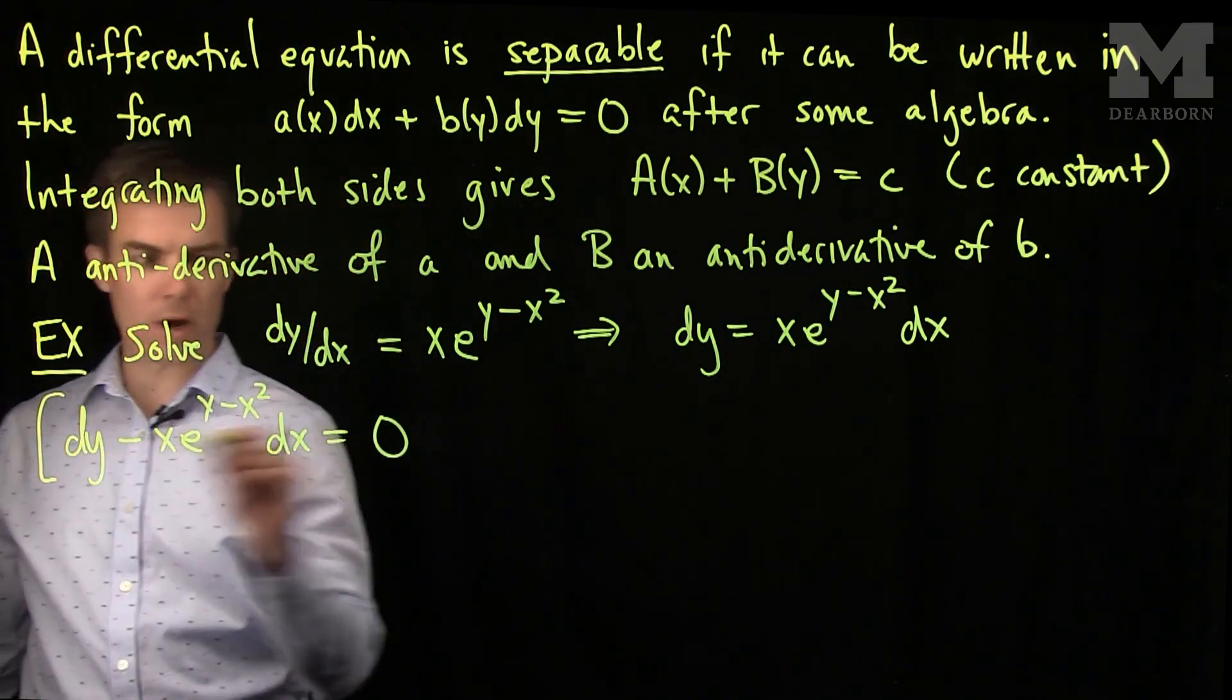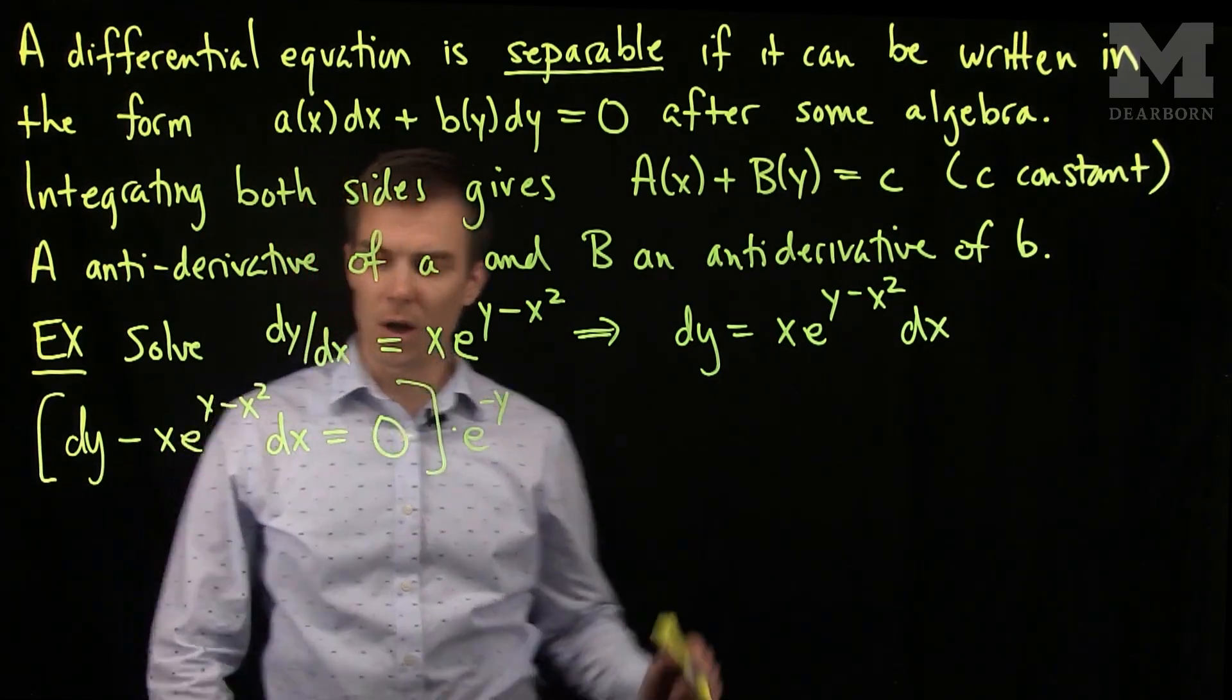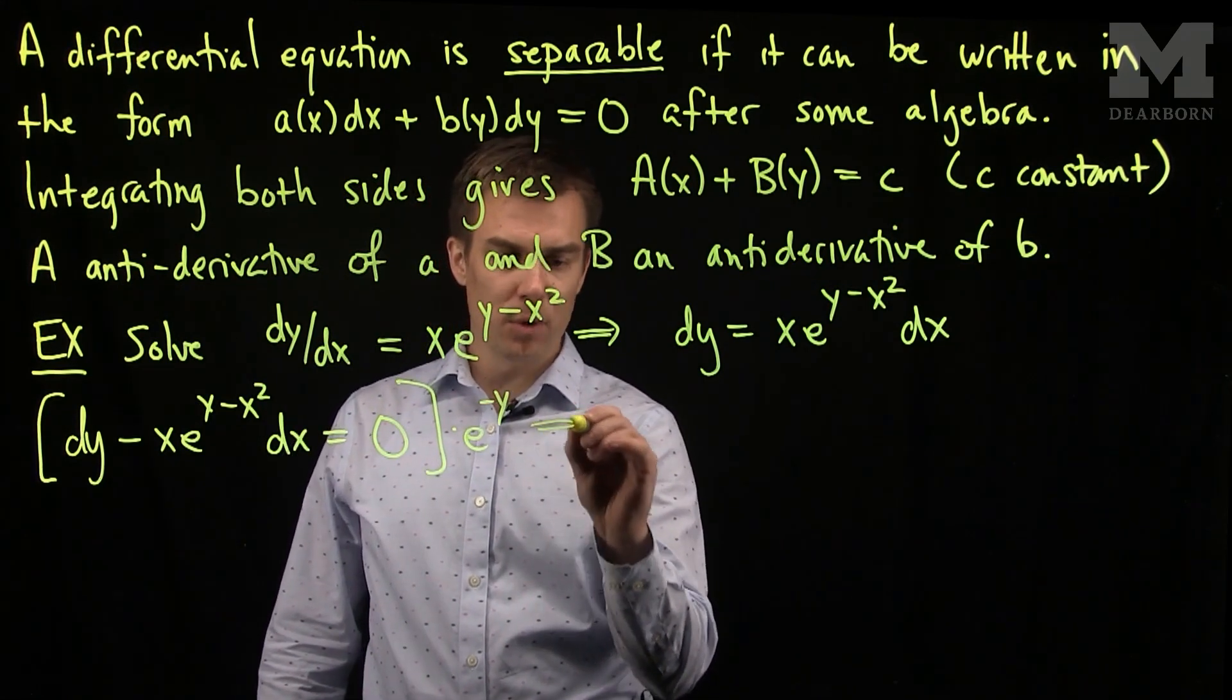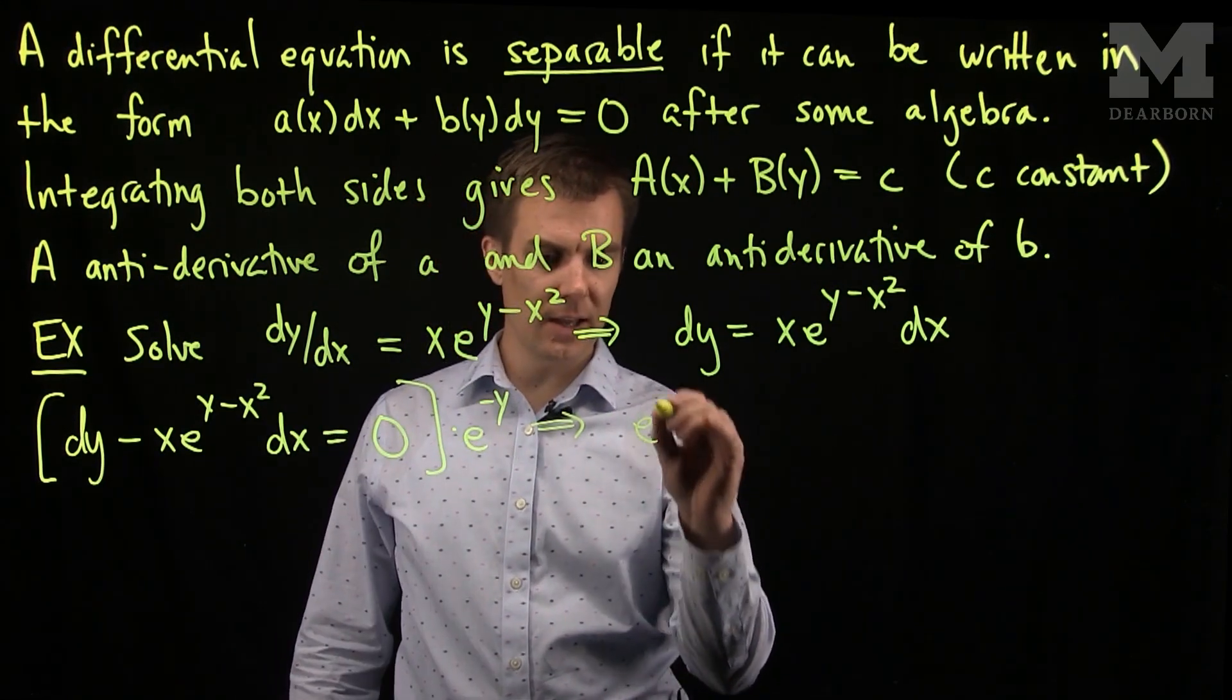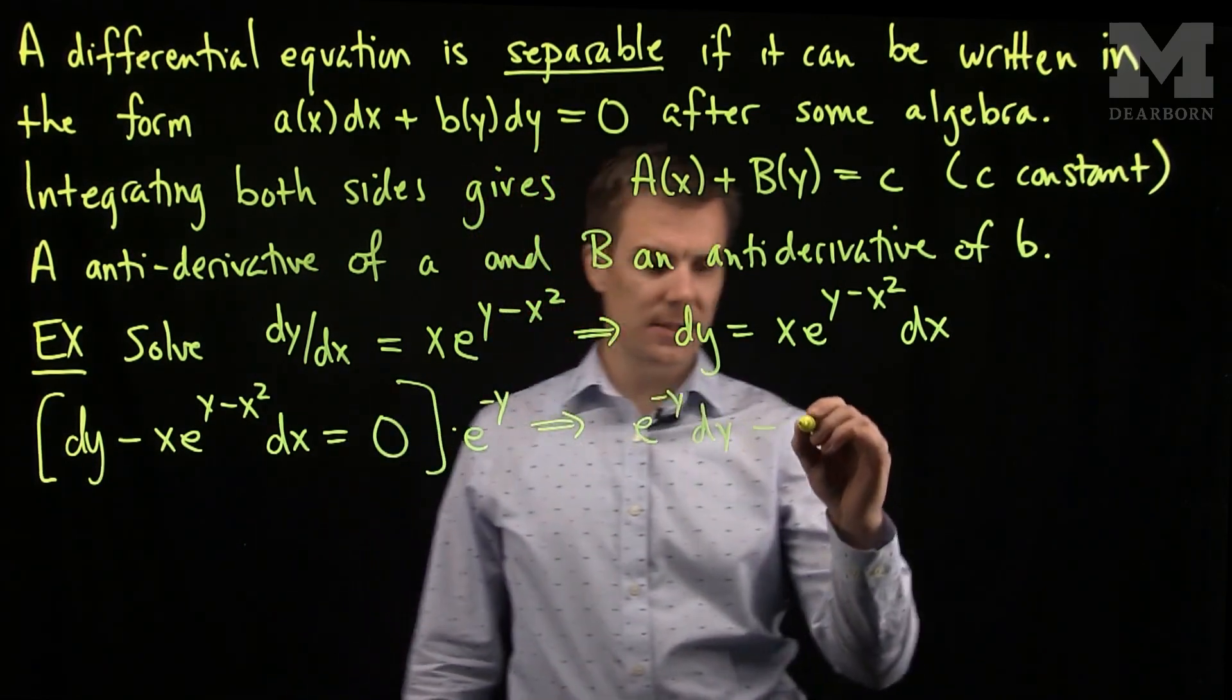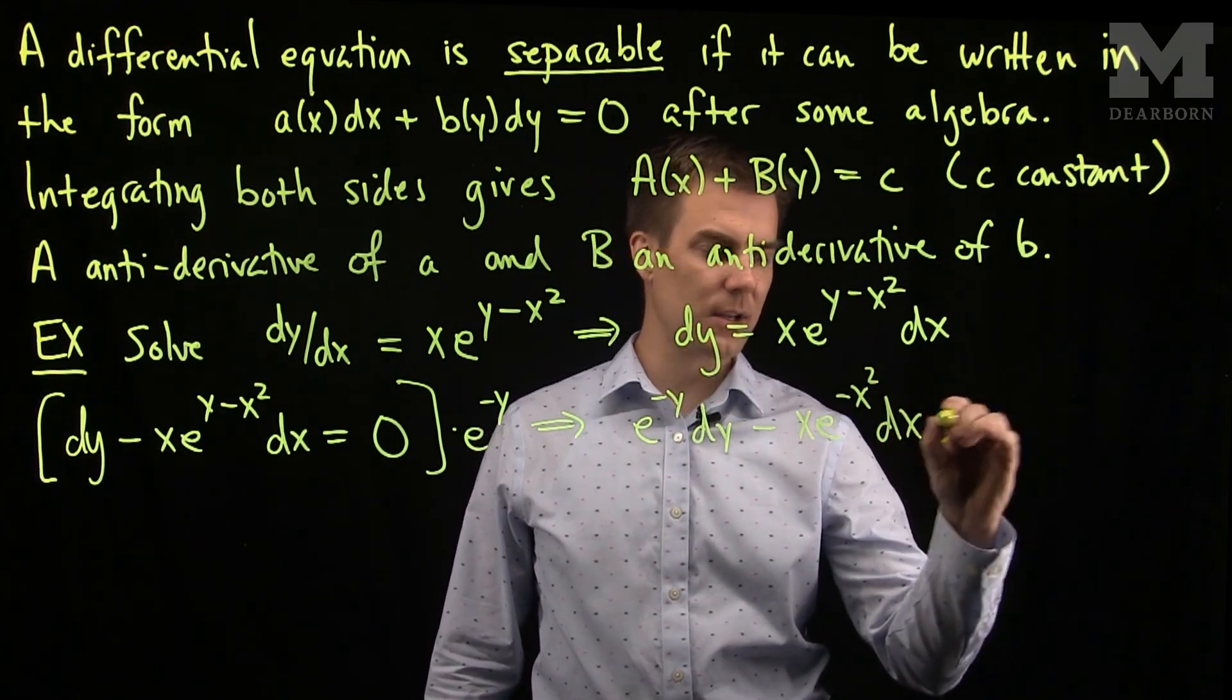We'll take the equation and multiply by e^(-y), which won't affect the zero at all, but it will put the equation into the right form. With this multiplication, I will get e^(-y)dy - xe^(-x²)dx = 0.